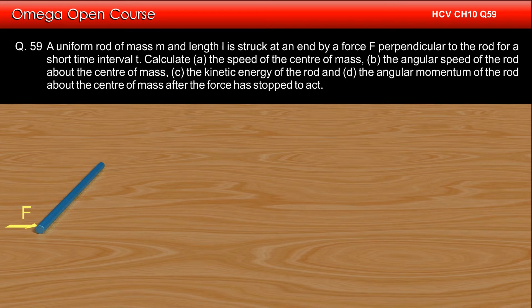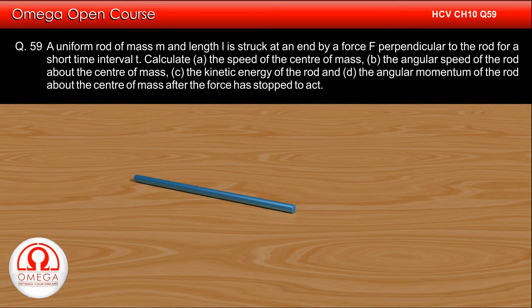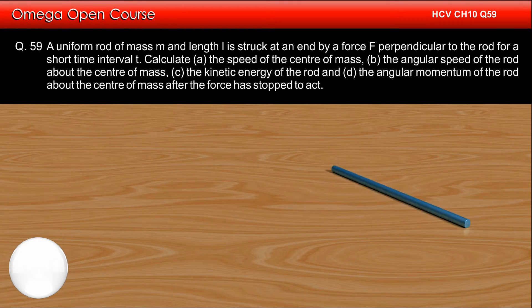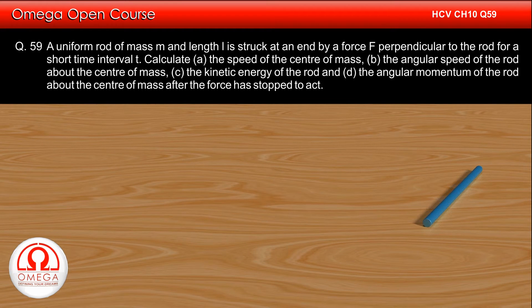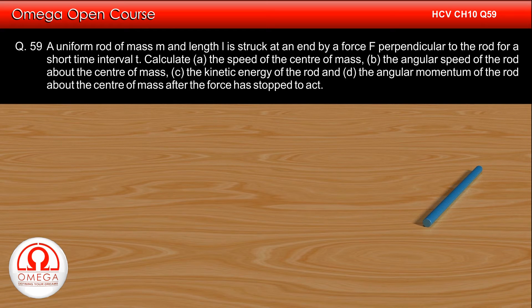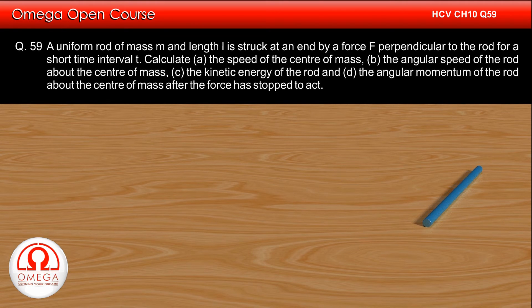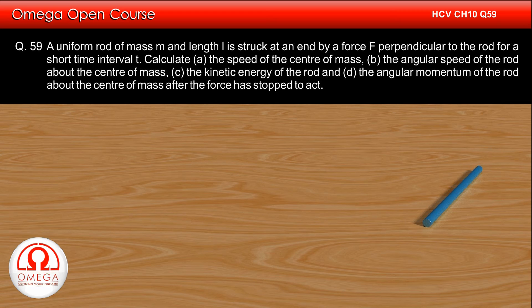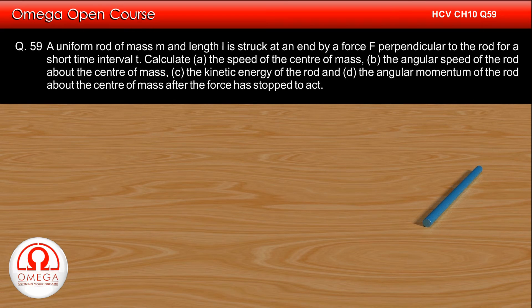A uniform rod of mass M and length L is struck at an end by a force F perpendicular to the rod for a short time interval T. Calculate: A) the speed of the center of mass, B) the angular speed of the rod about the center of mass, C) the kinetic energy of the rod, and D) the angular momentum of the rod about the center of mass after the force has stopped acting. Assume T is so small that the rod does not appreciably change its direction while the force acts.